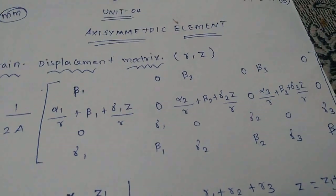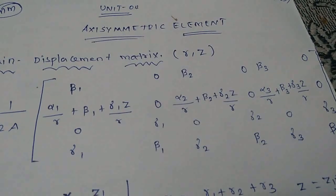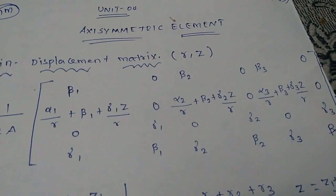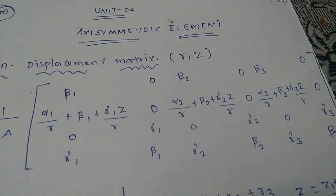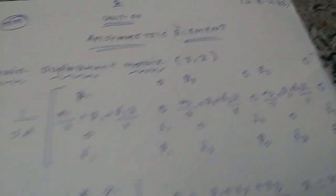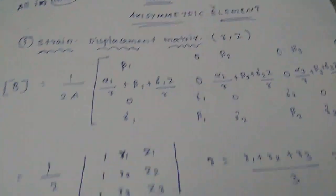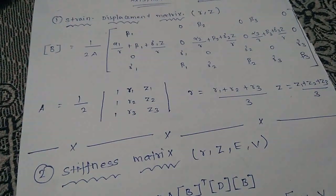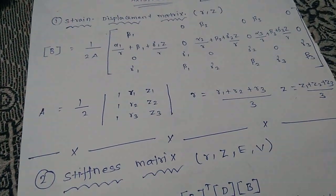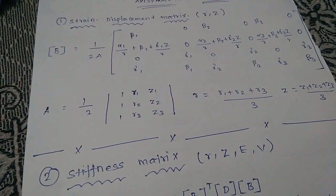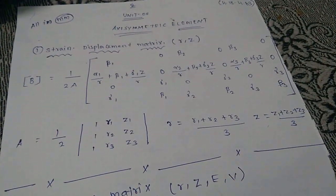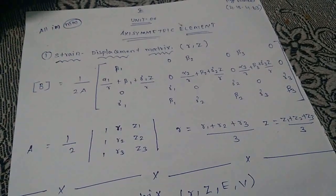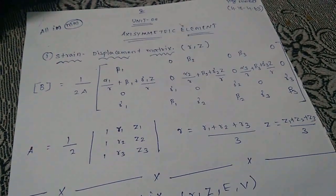The B-matrix formula includes: beta1, 0, beta2, 0, beta3, 0; then 0, gamma, 0, gamma, 0, gamma; and gamma, beta, gamma, beta. The B-matrix formula is 1 by 2A, with a determinant using R1, R2, R3, Z1, Z2, Z3. This forms the strain-displacement matrix.